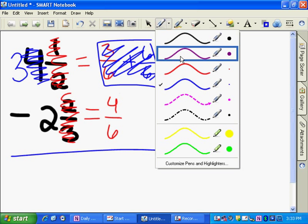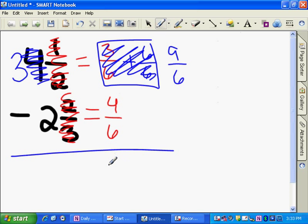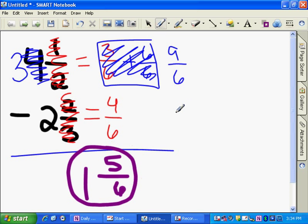So when we do that, 9 over 6 minus 4 over 6 is 5 over 6, and that can't be simplified, and 3 minus 2 is 1. So this answer is 1 and 5 over 6.